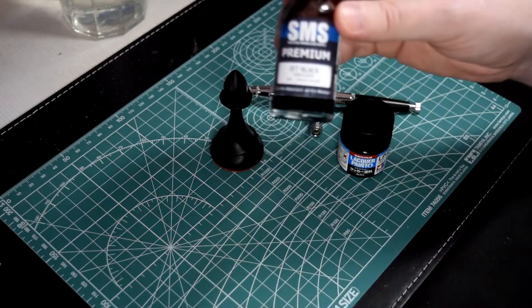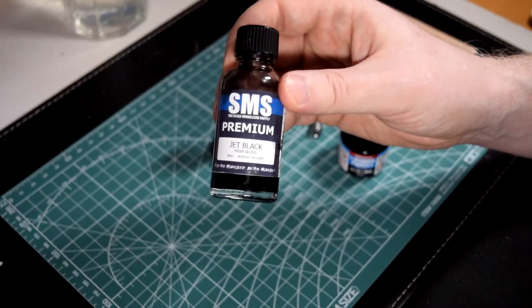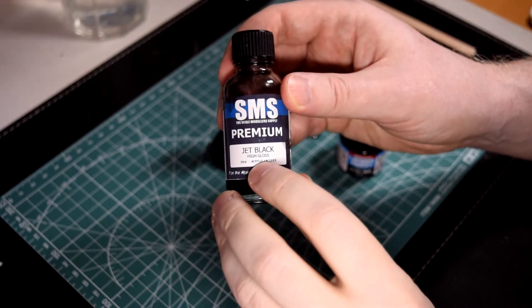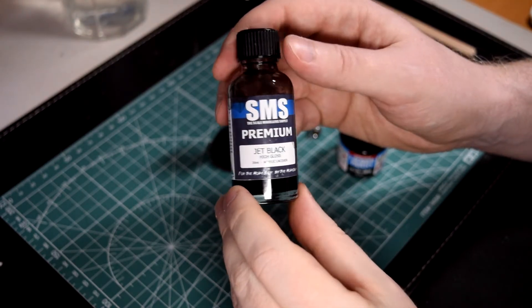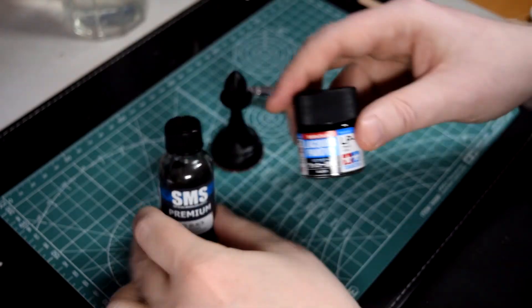This is SMS's Jet Black High Gloss Acrylic Lacquer. Although it's a high gloss, because the piece is still unvarnished and rough, you'll get a satin finish.